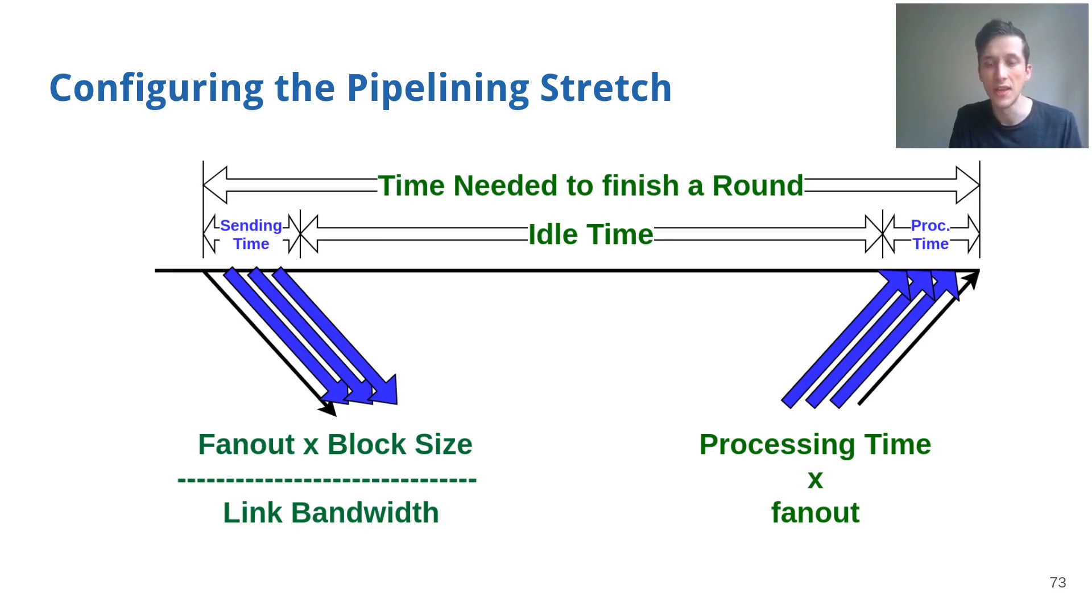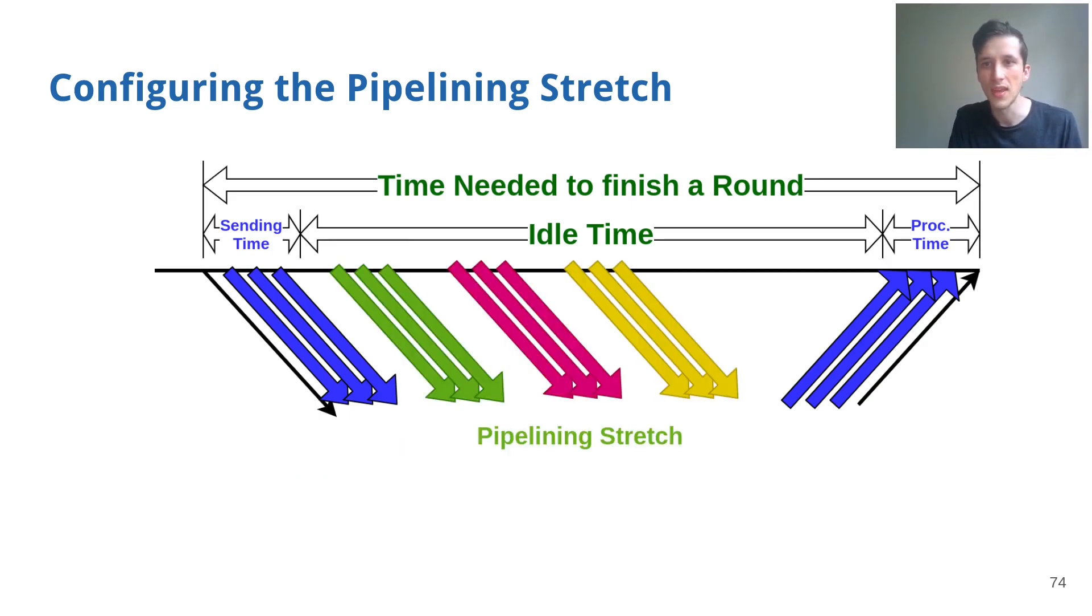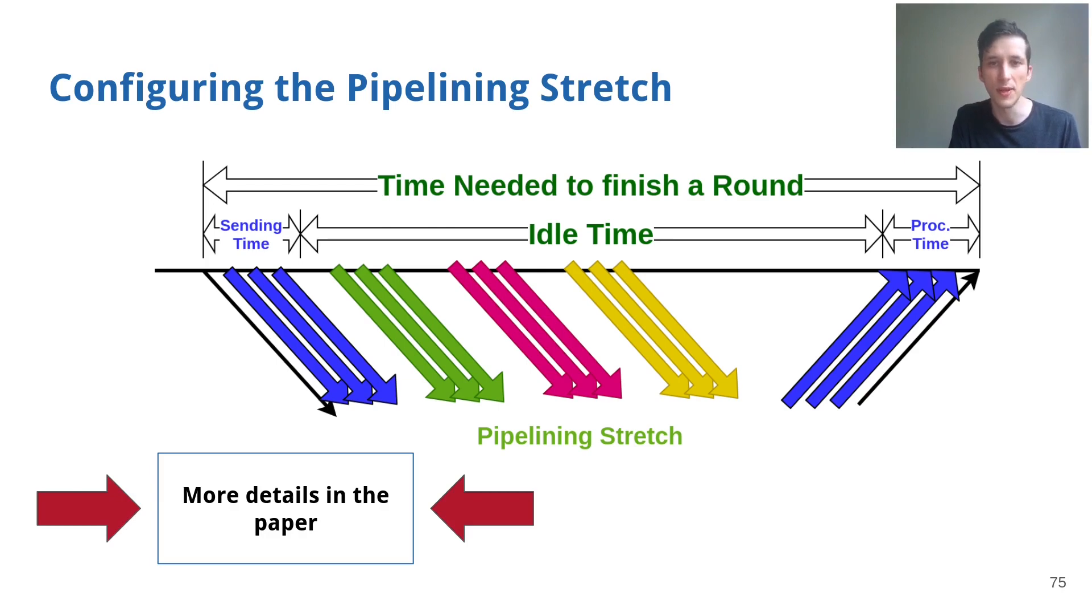This allows us to calculate how many additional blocks we can fit inside this idle time, and we denote this the pipelining stretch. In a nutshell, the smaller the fanout and the greater the idle time, the bigger the resulting pipelining stretch. For more details and example numbers, please check out our paper.